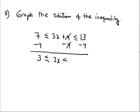7 minus 4 is 3, 13 minus 4 is 9. Divide by 3. Divide by 3 is positive, so the inequality stays the same. It's 1 less than or equal x less than or equal 3.